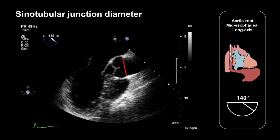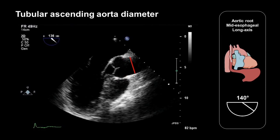We also need to describe the appearance of the sinotubular junction, and whether it looks normal, or whether there is effacement of the junction, which is what we see in patients with Marfan syndrome. And finally, we should measure the tubular ascending aorta. The normal diameter here is 2.2 to 3.6 centimetres.